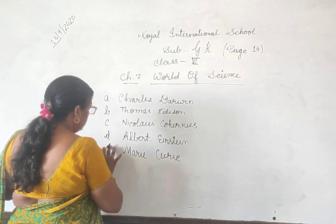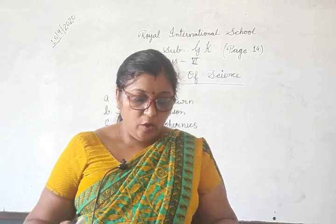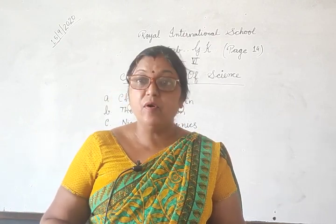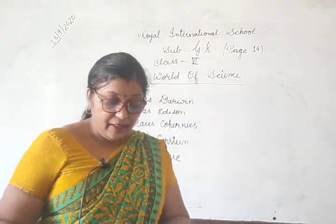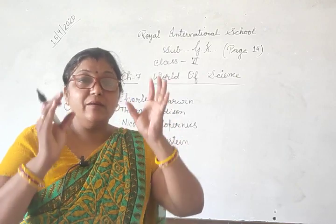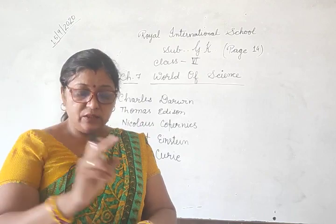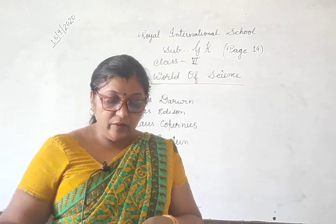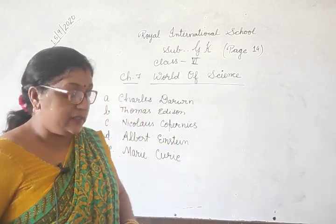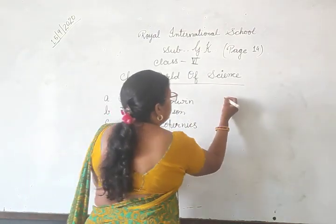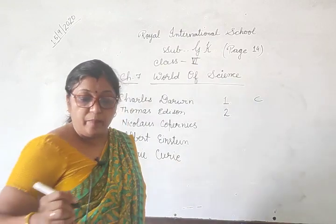The clue is: the sun is at the center of our solar system and all the planets orbit around it. So who made this discovery? This invention was by Nicholas Copernicus. So the first answer here is C — Nicholas Copernicus.